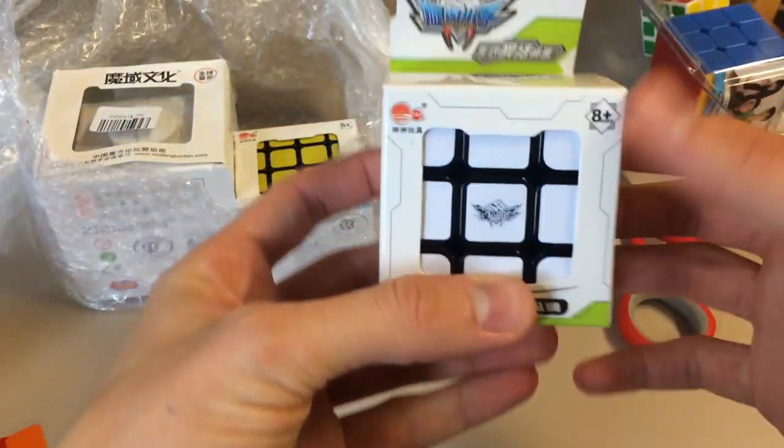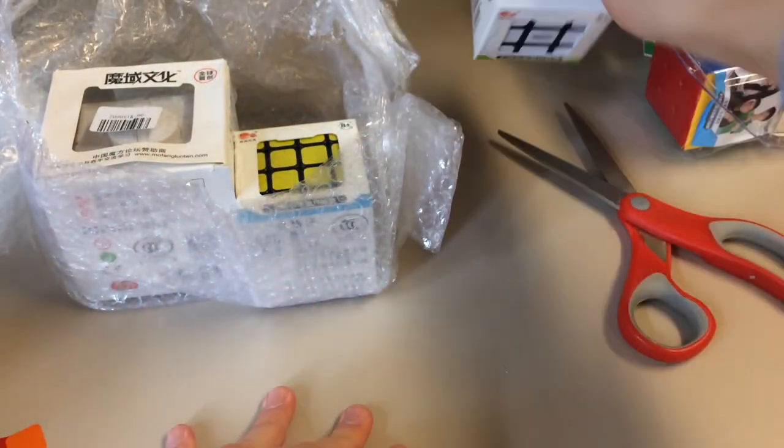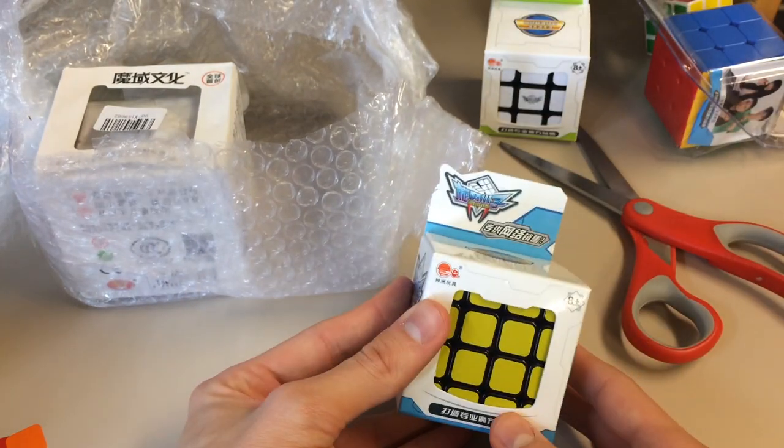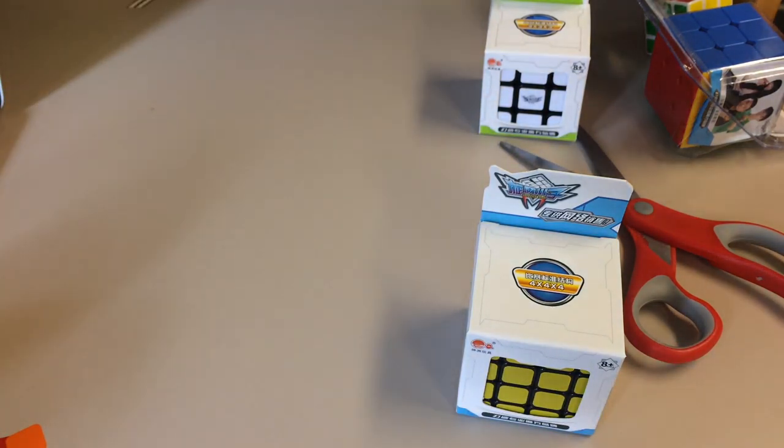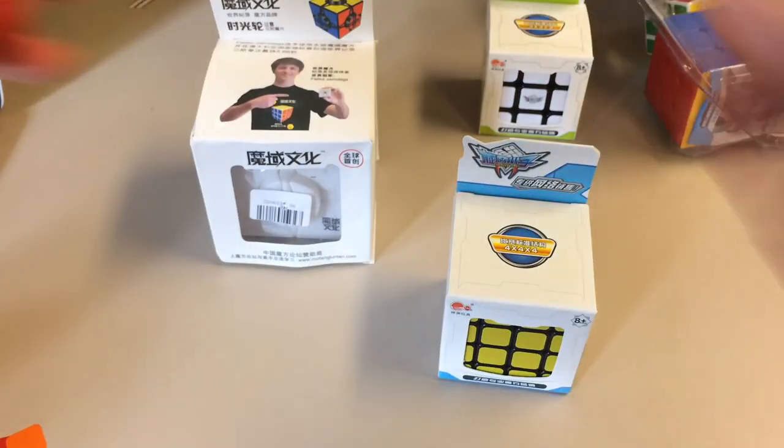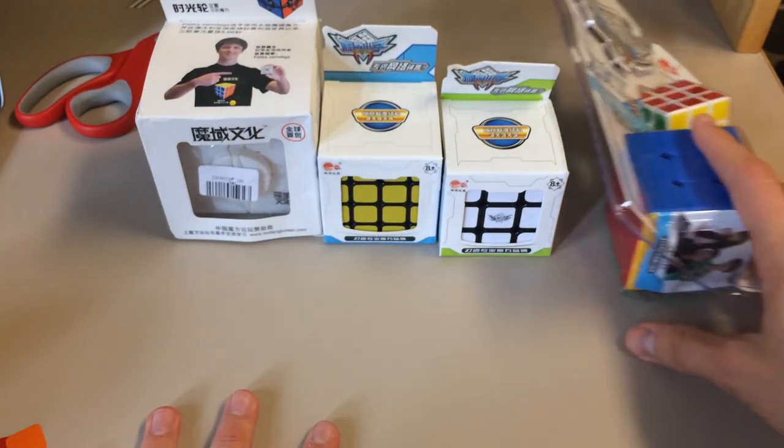So I will probably have to contact them and figure out the name of that. And here we have another Cyclone Boys 3x3. I told them to put labels on them. I guess we'll see. I was aware they were going to be sending me some Cyclone Boys 3x3s, and I know there are multiple different kinds of Cyclone Boys 3x3s. But anyways, they decided to send me all of these.